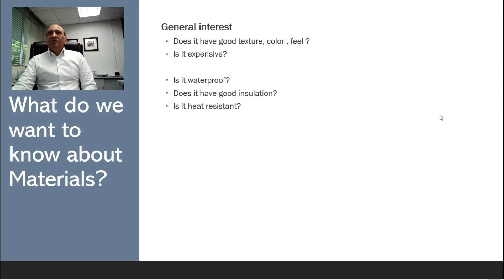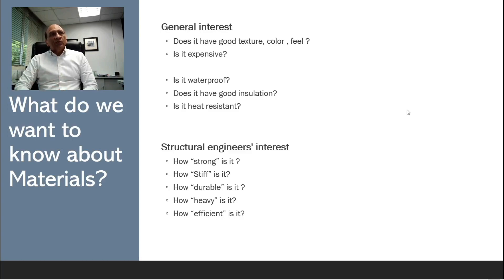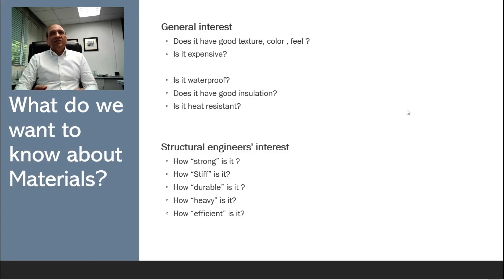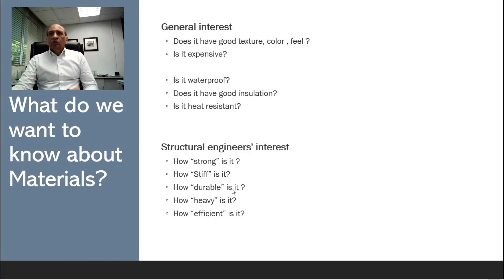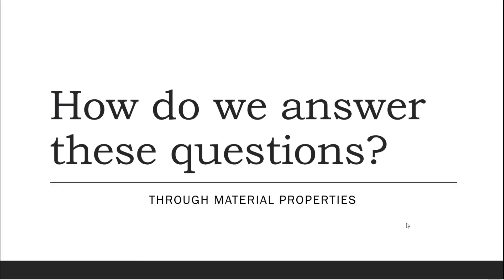These are general interests, but from a structural engineer's point of view we would also like to know how strong the material is, how stiff it is, how durable it is, how heavy it is, and how efficient it is. These terms must be defined before we can answer them, because strength needs numbers and stiffness needs a definition. These questions can be answered by looking at the material properties.